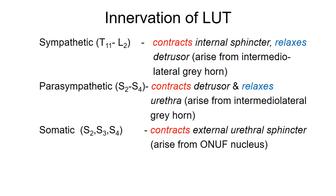Expanding on the peripheral nerve supply: the sympathetic nerve arises from the intermediolateral gray horn from T11 to L2. Its stimulation causes contraction of the internal sphincter and relaxation of the detrusor, facilitating bladder filling. The parasympathetic nerve supply arises from the intermediolateral gray horn of S2 to S4, called the sacral parasympathetic nucleus. Its stimulation causes contraction of the detrusor and relaxation of the urethra, producing voiding. The somatic pudendal nerve causes contraction of the external urethral sphincter, with fibers arising from Onuf's nucleus along the lateral border of the ventral horn.